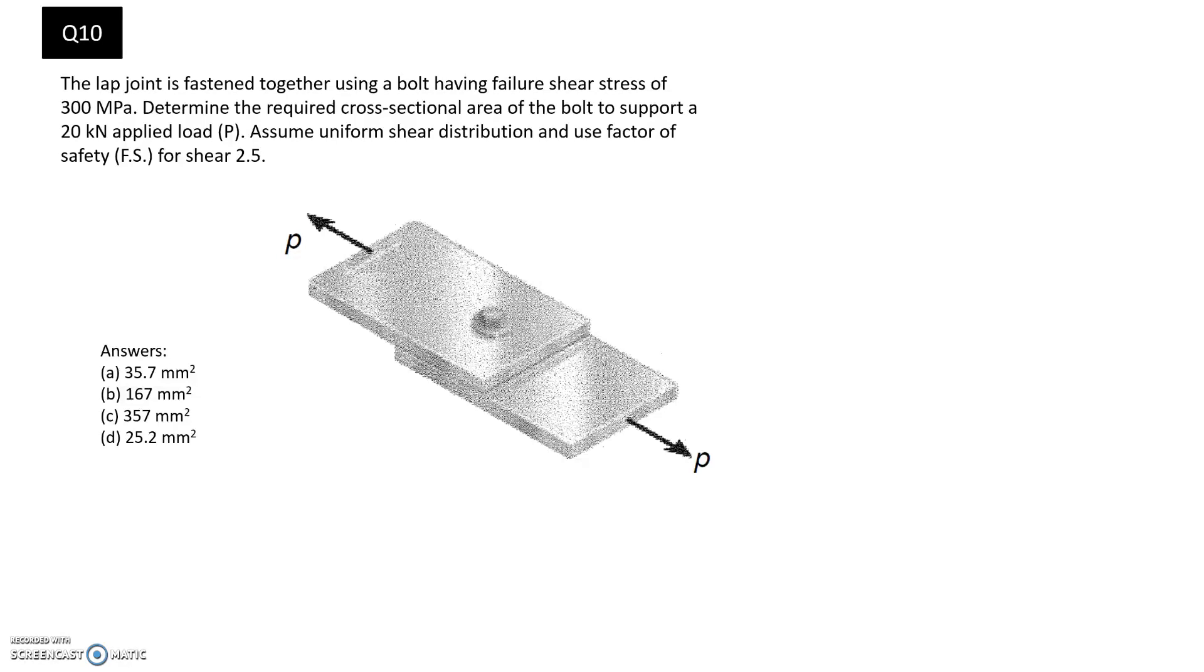So the lap joint is fastened together using a bolt having a failure stress of 300 megapascals. Determine the required cross-sectional area of the bolt to support a 20 kN applied load, P, and we're going to assume uniform shear distribution and a safety factor of 2.5.